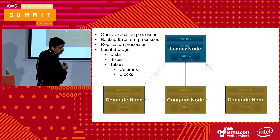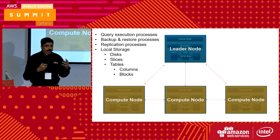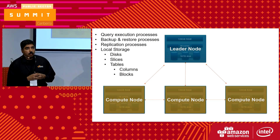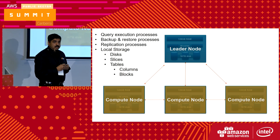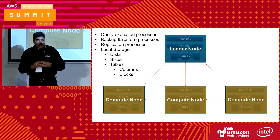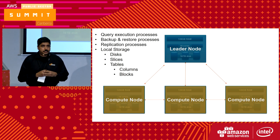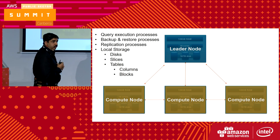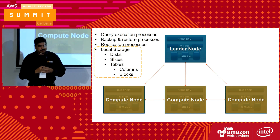On the compute node, there is query execution and a processing engine running. You have backup and restore processes happening — all backups go directly out into S3, and we continuously back up data into S3 for you. There is a replication process that happens between the compute nodes. We also have local storage attached to the compute nodes, which contains your disks, slices, tables, columns, and blocks.